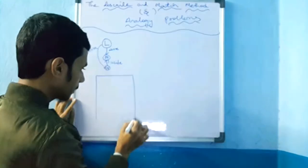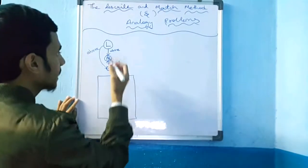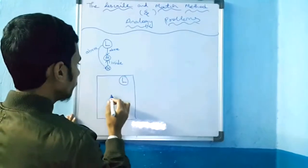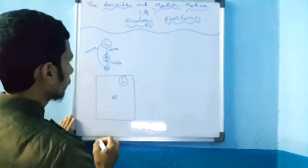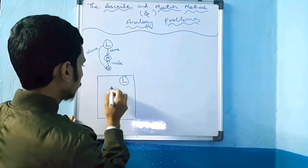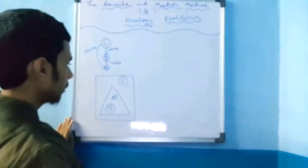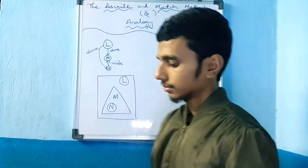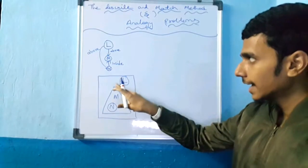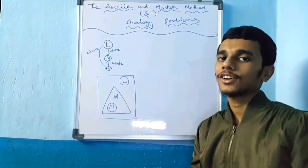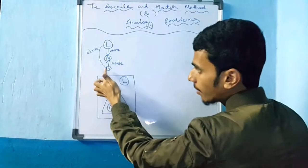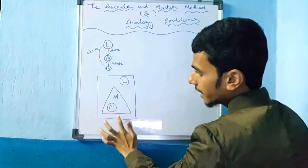I'll draw this out. L is above M and above N, and N is inside M. So I draw L, then below it M, and N is inside M. We can write: L is above M, L is above N, and N is inside M.